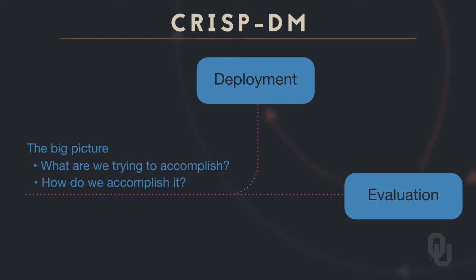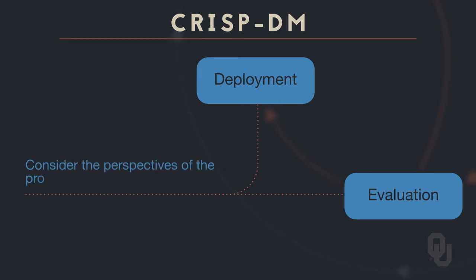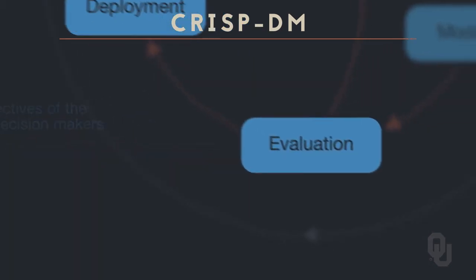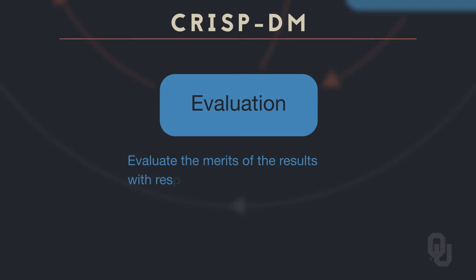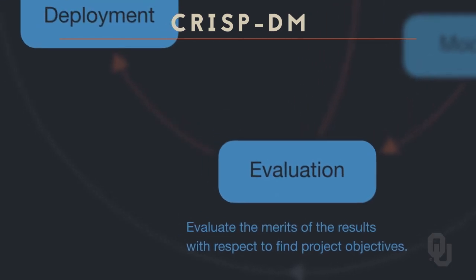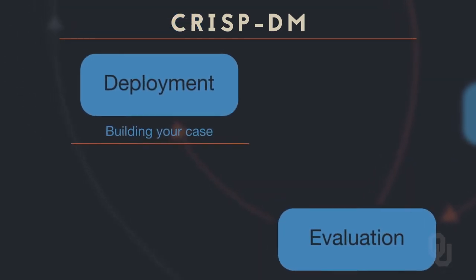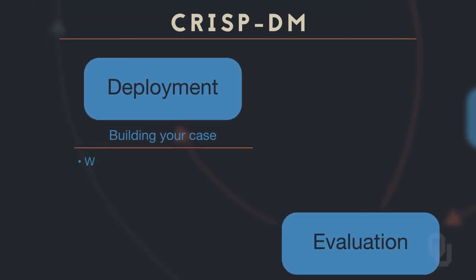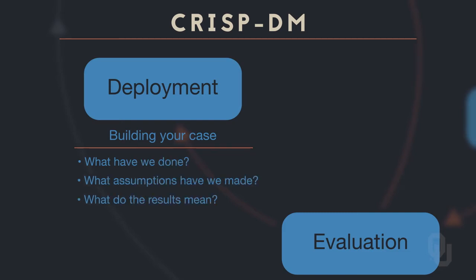At this point, a successful data scientist needs to fully consider the perspective of the project owner and the decision makers. The first goal is to honestly evaluate the merits of the results with respect to the defined project objectives. If the results are worth implementing, the data scientist needs to help build this case. This means understanding what we have done, what assumptions we've made, what the results mean, and being able to explain ourselves in terms that matter to the decision maker.